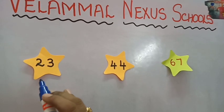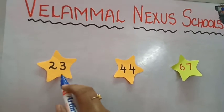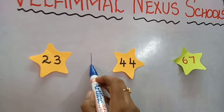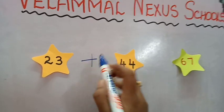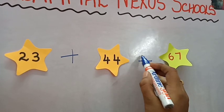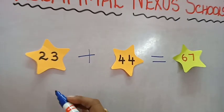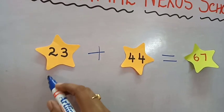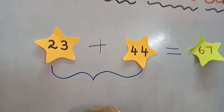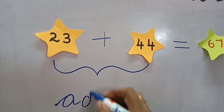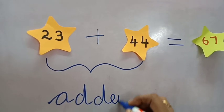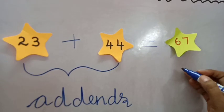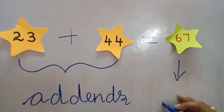Here we have two sets of numbers: 23 and 44. When we add 23 and 44, we get 67. The numbers 23 and 44 that we add are always called Addends. So children, the numbers that we add are called Addends, and the answer is always called the Sum.